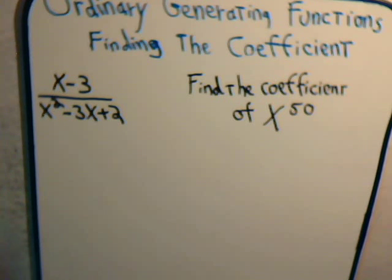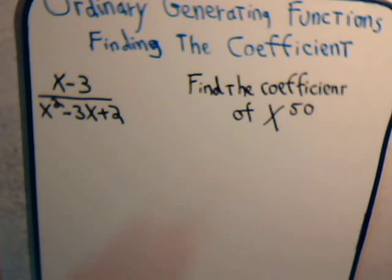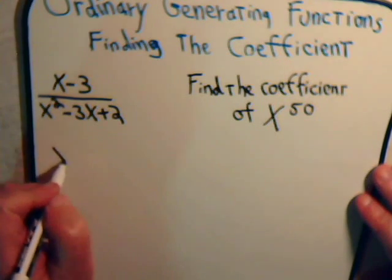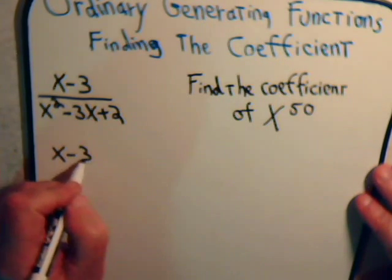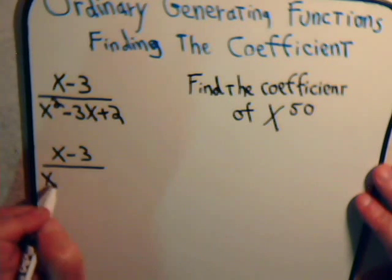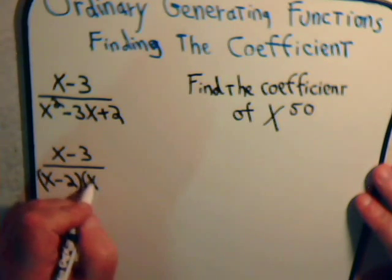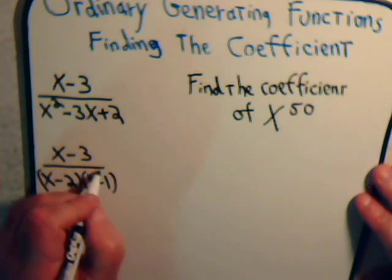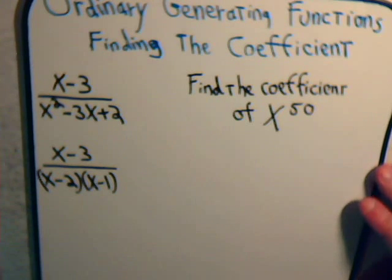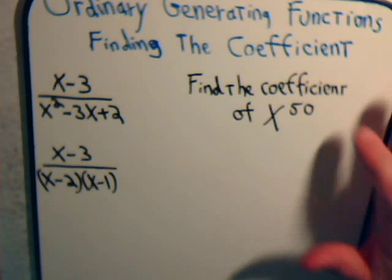Now we look at this, first thing we realize is the denominator here, we can factor that. So here, this is x minus 3 divided by x minus 2 times x minus 1. And again, in this expression, we want to find the coefficient of x to the 50th power.